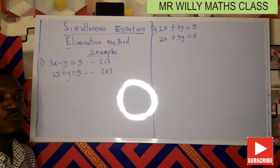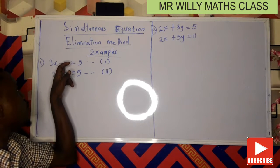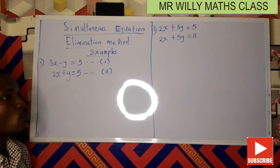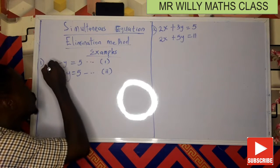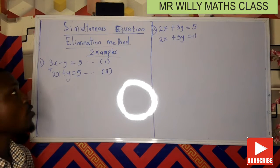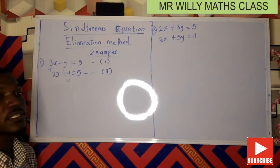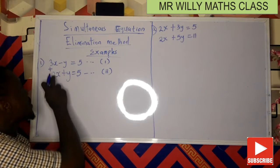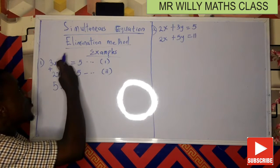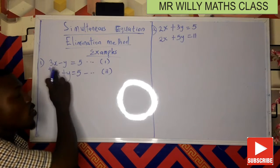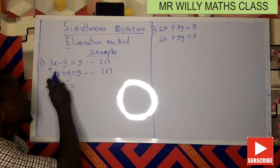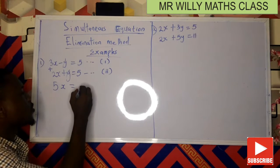Adding equation one and equation two: 3x minus y equals 5, plus 2x plus y equals 5. So 3x plus 2x gives 5x. Then minus y plus y — they cancel each other out. And 5 plus 5 equals 10. So we have 5x equals 10.